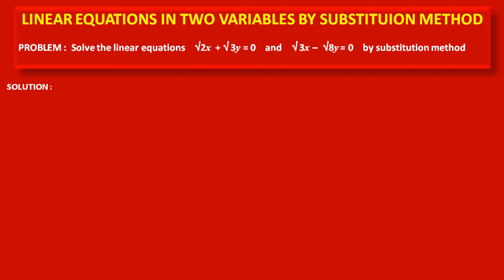Now see the solution. The first given equation is root 2x plus root 3y is equal to 0 — we will consider it as equation number 1. The second one is root 3x minus root 8y is equal to 0. Solving this, we get x is equal to root 8y upon root 3, because minus root 8y moves to the right-hand side. We will consider this as statement number 2.